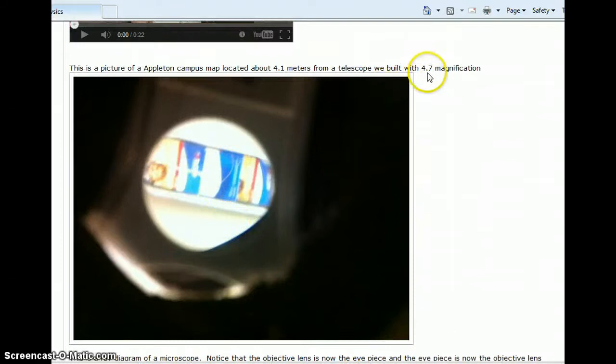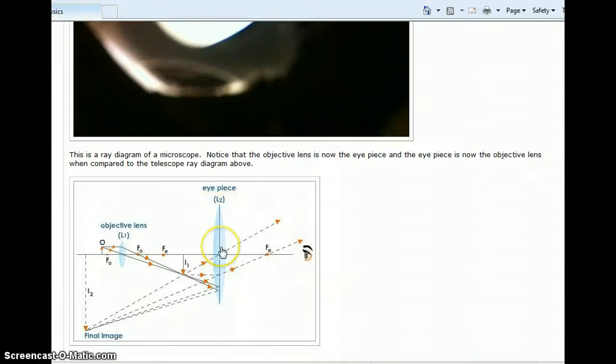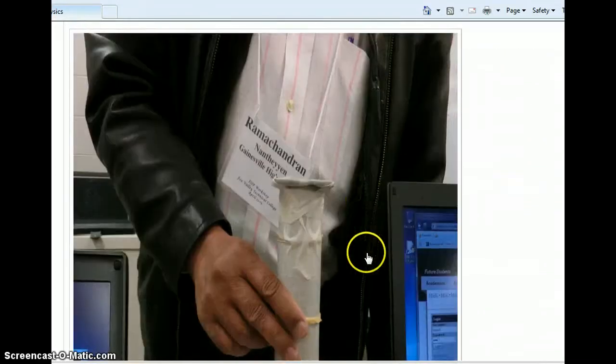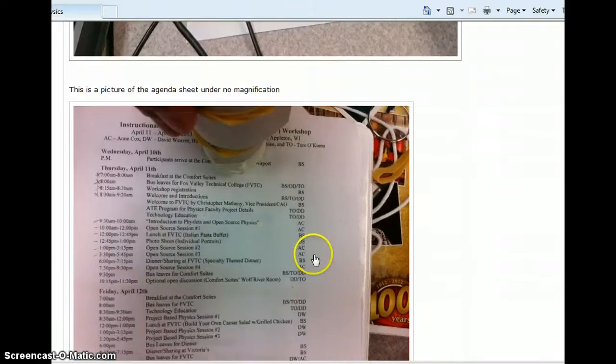Here we have a ray diagram for a microscope. The cool thing for me was to realize, oh well, it's just replace, change the objective lens to the eyepiece and change the eyepiece to the objective lens. It's just like a telescope but backwards. That's right, I just thought that was really cool.